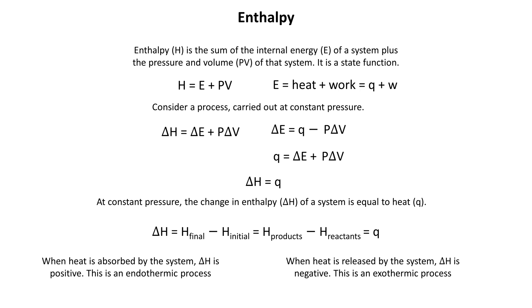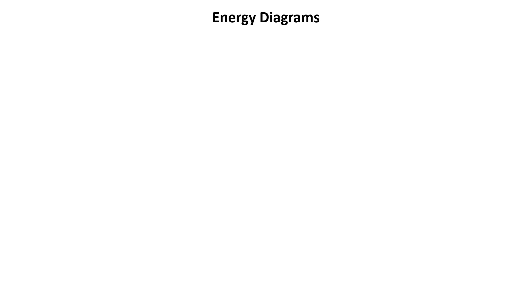Now we can represent these endothermic and exothermic processes not just with signs, but also with a diagram. Let's talk about energy diagrams — sometimes these are called reaction coordinates. Let's first take a look at what an exothermic reaction would look like.